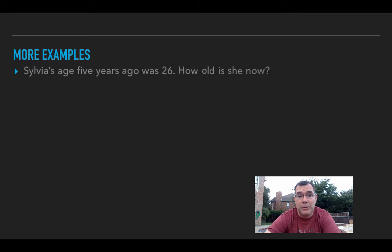So here's some more examples. Sylvia's age five years ago was 26. How old is she now? S is what I'm using for Sylvia's age. Five years ago means that we have to subtract five from her current age, and that equals 26.